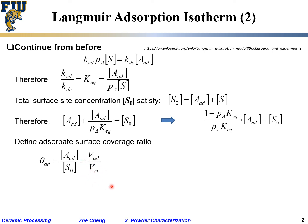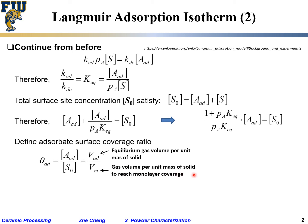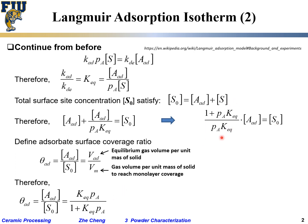Vm is the gas volume under complete monolayer coverage. With these definitions, we can write the surface coverage ratio theta as [Aad] divided by S0, which becomes Keq·pa divided by (1 + Keq·pa) after inverting the rearranged term.